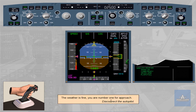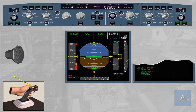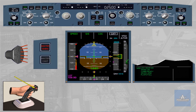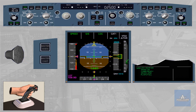Disconnect the autopilot. Turning an autopilot off via the Takeover push button triggers the following temporary warnings. By pressing the takeover push button again, you will cancel all these warnings immediately. Notice that on the FCU, the autopilot lights are extinguished. On the FMA, autopilot 1 plus 2 is no longer displayed. The approach capability is downgraded to CAT 1, and on the ECAM system, all warnings are now off.